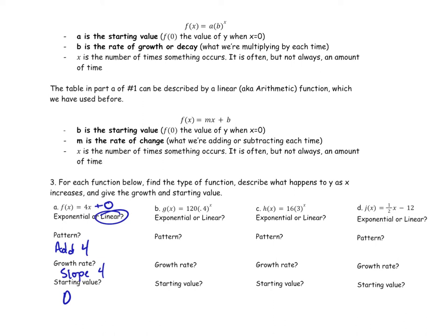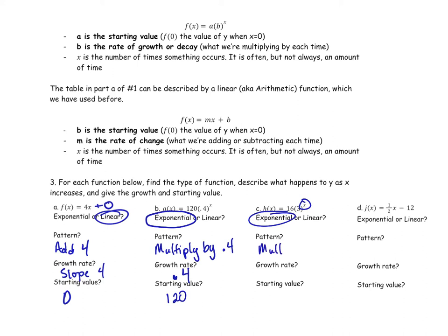The next one, 120 times 0.4 to the power of X — because our exponent is the variable, we have an exponential equation. This is going to multiply by 0.4 every time, so it's going to get smaller. This is exponential decay. Our growth rate is 0.4 and our starting value is 120. The next one also has the variable as an exponent, so it is exponential — it's going to multiply by 3 every time. Our growth factor is 3 and our starting value is 16.